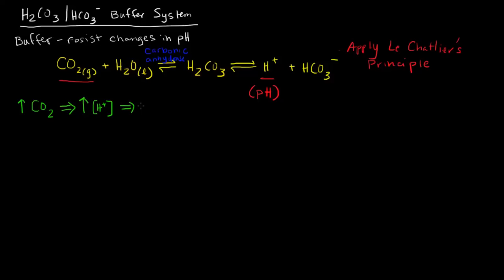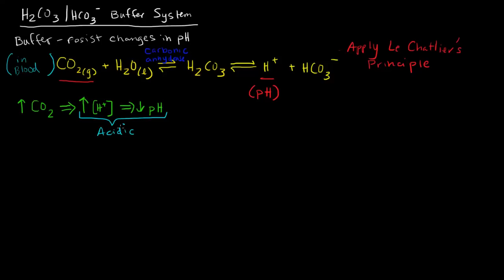An increase in H+ concentration means more acidic, and more acidic is a lower pH. An increase in carbon dioxide concentration in the blood is going to make the environment acidic. That is termed acidosis — if you've heard that medical term before. That's when the pH of the blood becomes too low, or too acidic.